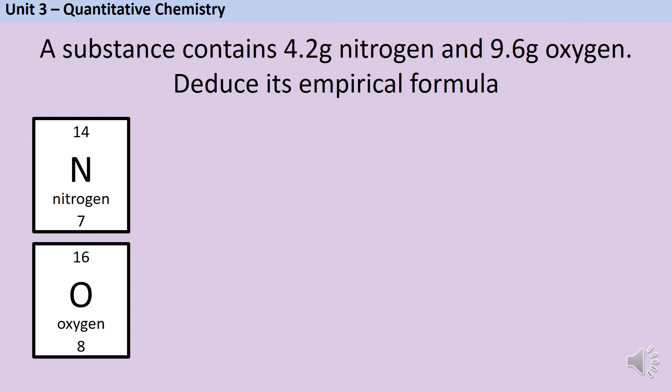Nitrogen has a relative atomic mass of 14 which I can tell because this is the larger of the two numbers on the periodic table square, and remember your periodic table does have a key which tells you which number the relative atomic mass is. Oxygen has a relative atomic mass of 16.